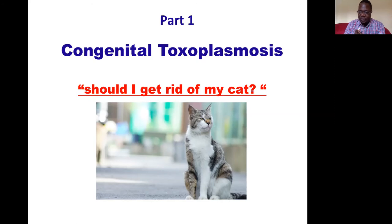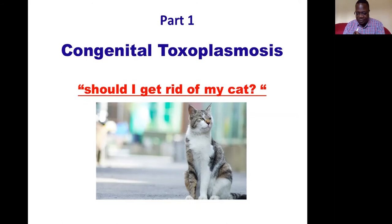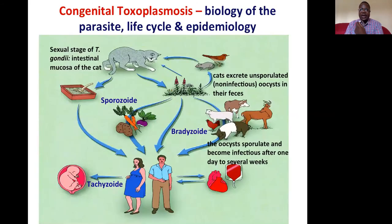Toxoplasmosis is caused by a parasite called Toxoplasma gondii. The main player in the transmission of this condition is the cat — which raises the question: should I get rid of my cat? By the end of this lecture, you will understand the answer. Now let's look at the life cycle and epidemiology of toxoplasmosis.